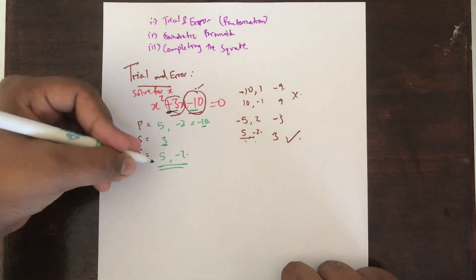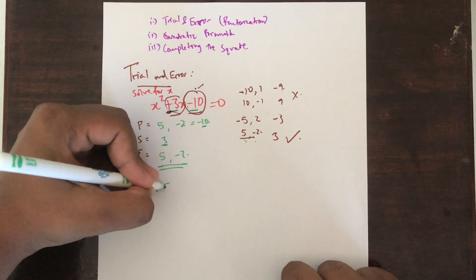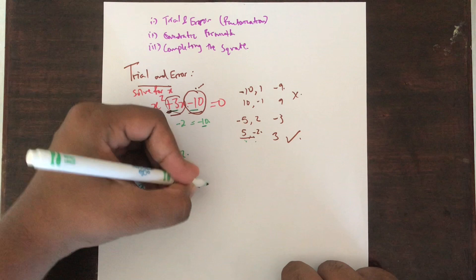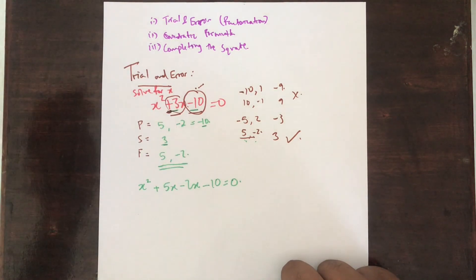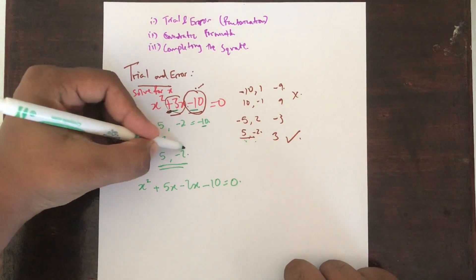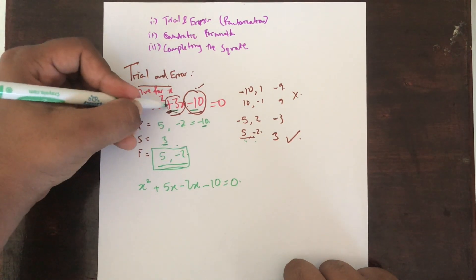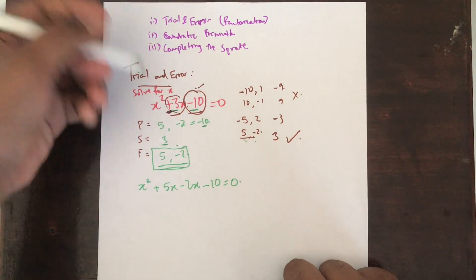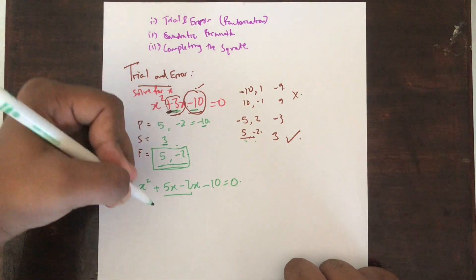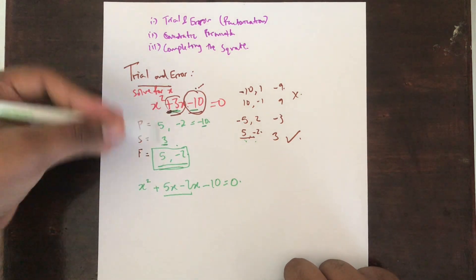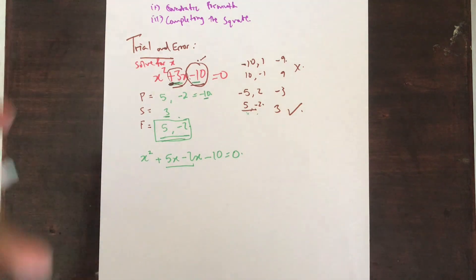We can simplify this by writing x squared plus 5x minus 2x minus 10 equals 0. Whatever you get, you substitute it instead of the middle term — I have substituted 3 as 5x minus 2x. This is a format you need to remember.